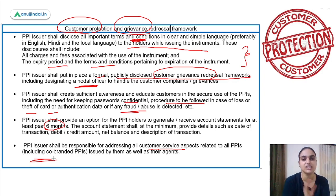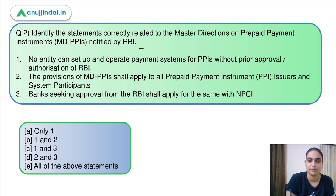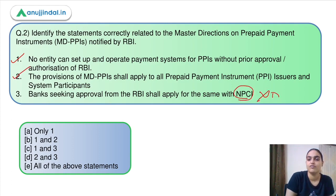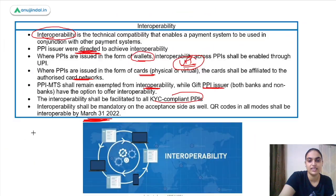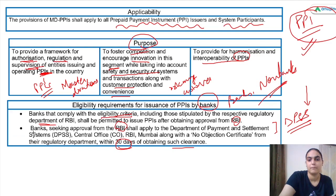Now let's move to the questions. Question two asks to identify correct statements related to master directions on PPIs. Statement one: no entity can set up a PPI without approval of RBI — correct. Statement two: provisions of these directions are applicable to PPI issuers and system participants — correct. Statement three: banks shall apply for approval with NPCI — incorrect; it should be with the Department of Payment and Settlement Systems. So the correct statements are one and two, and the answer is option B.